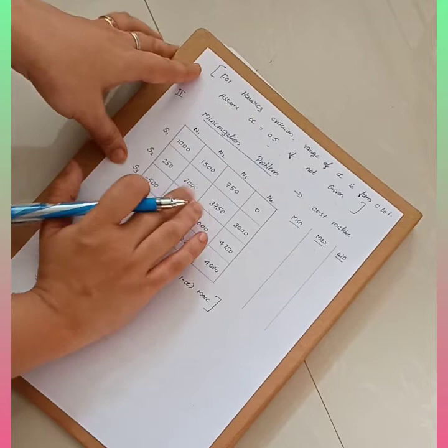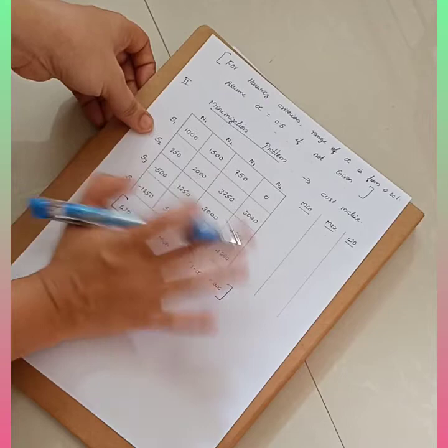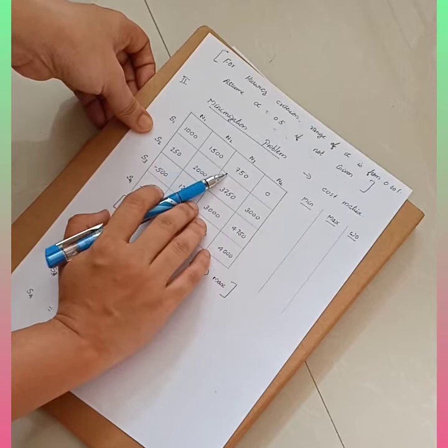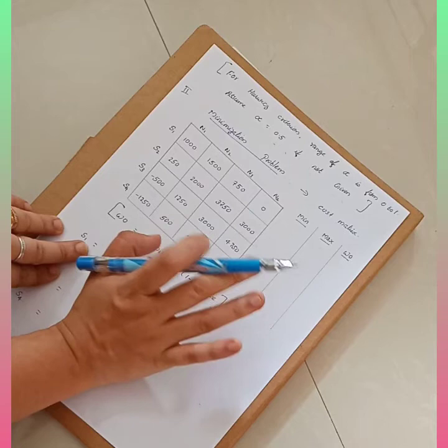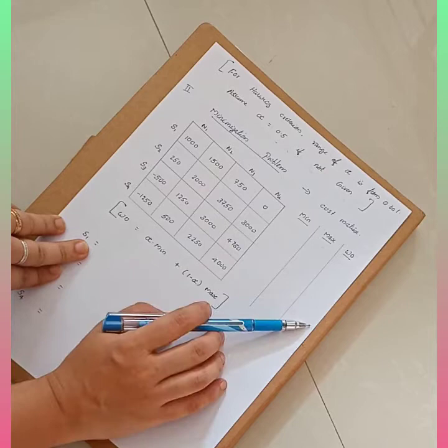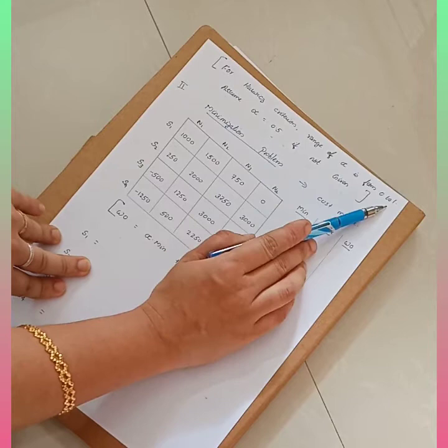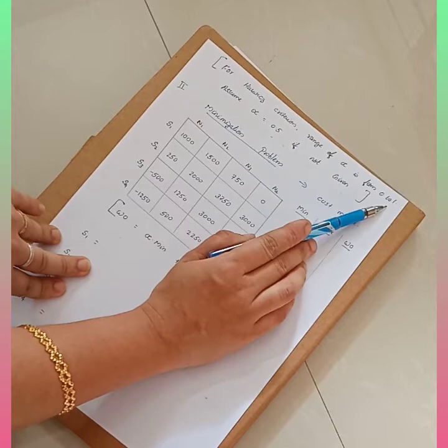Now, when it comes to the minimization problem, I have taken the same values. In this minimization problem, the alpha value is not given. Whenever a cost matrix is given, you have to consider it a minimization problem. As mentioned before, if the alpha value is not given, you have to assume alpha is 0.5. The range of alpha value for Hurwicz's criterion is from 0 to 1, and if not given, assume 0.5 by default.